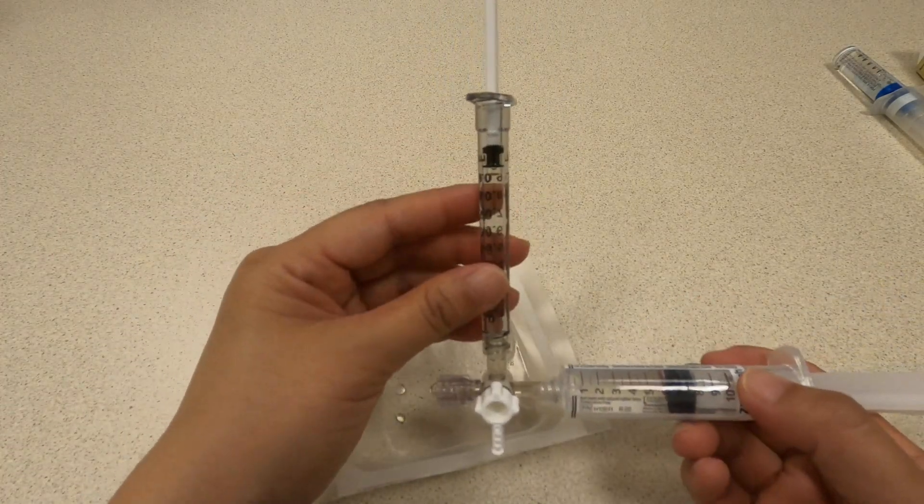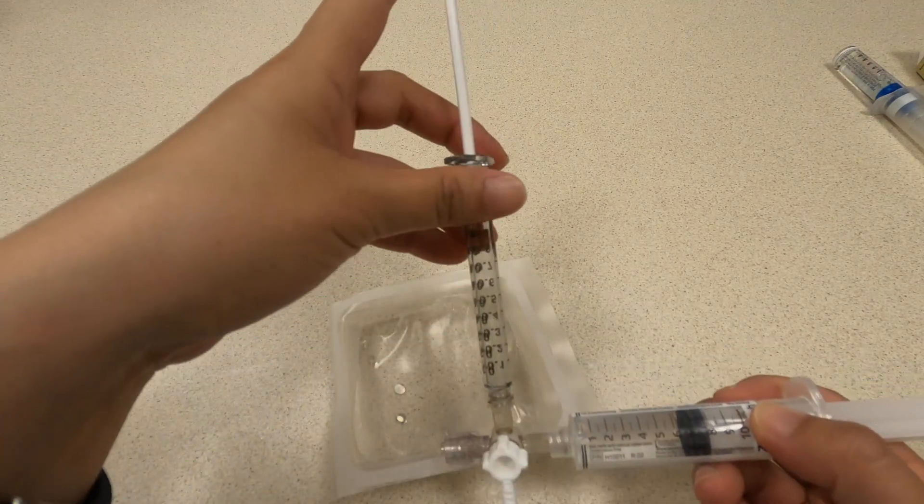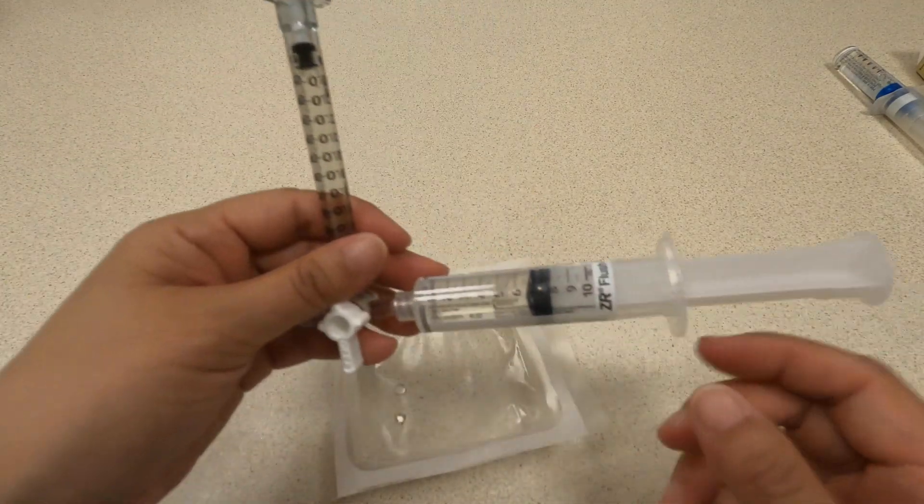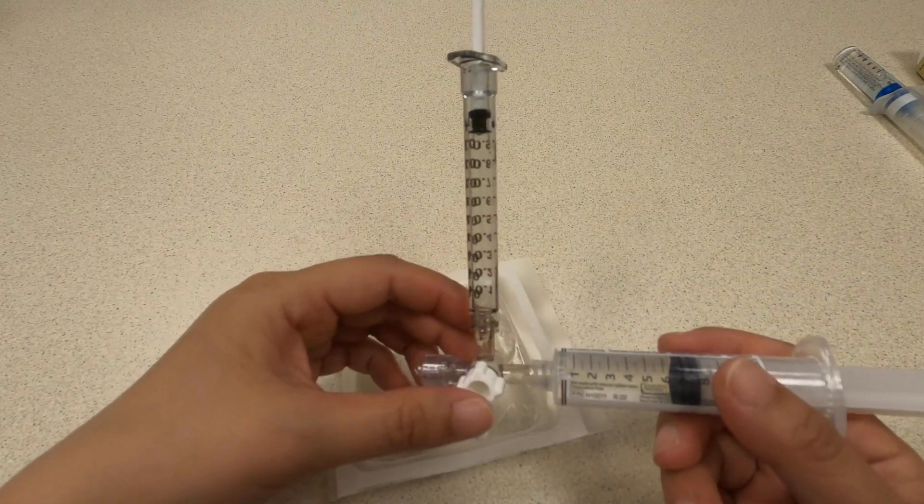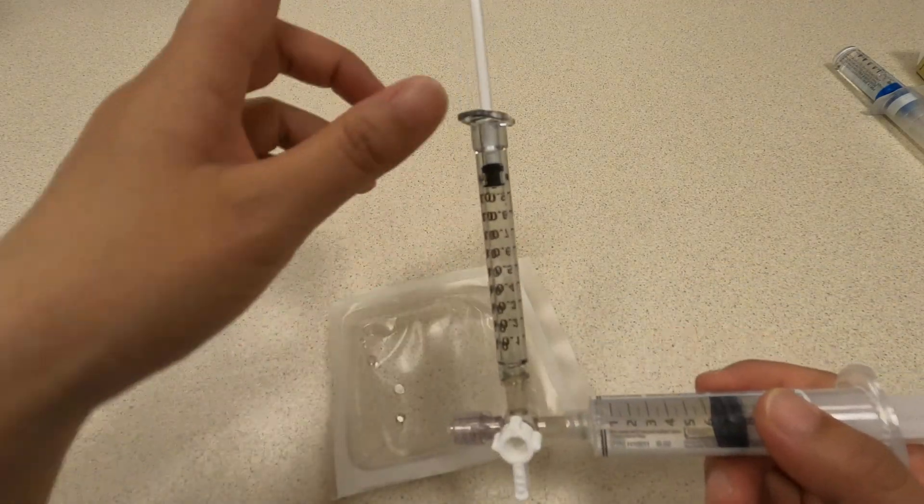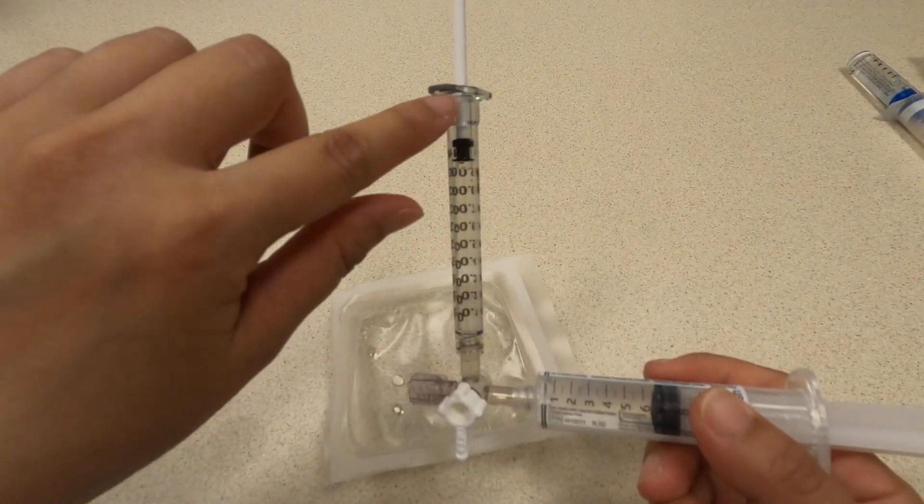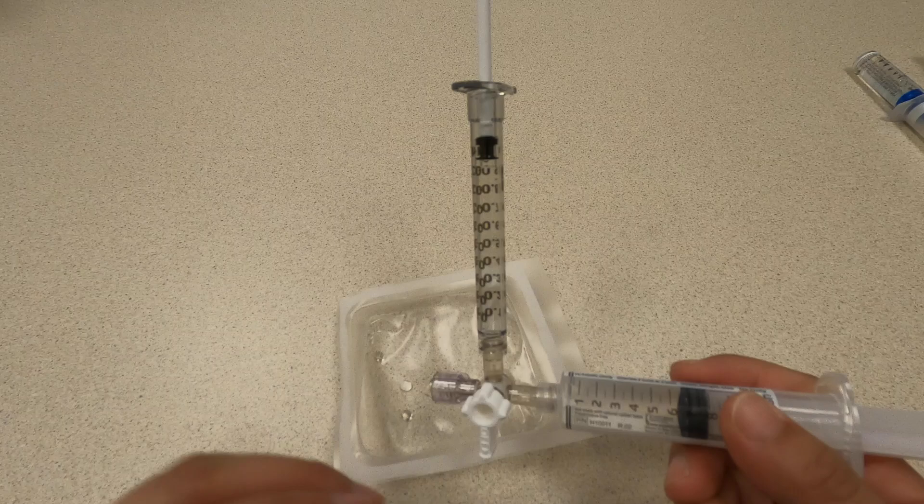The main thing to remember with the adenosine dosing is that when you push down on here, you're going to keep the plunger down when you push the flush. Fluid always wants to follow the path of least resistance, so if you don't have the plunger down when you push down on your flush, the flush will just go into this syringe and not actually push your adenosine towards the patient.